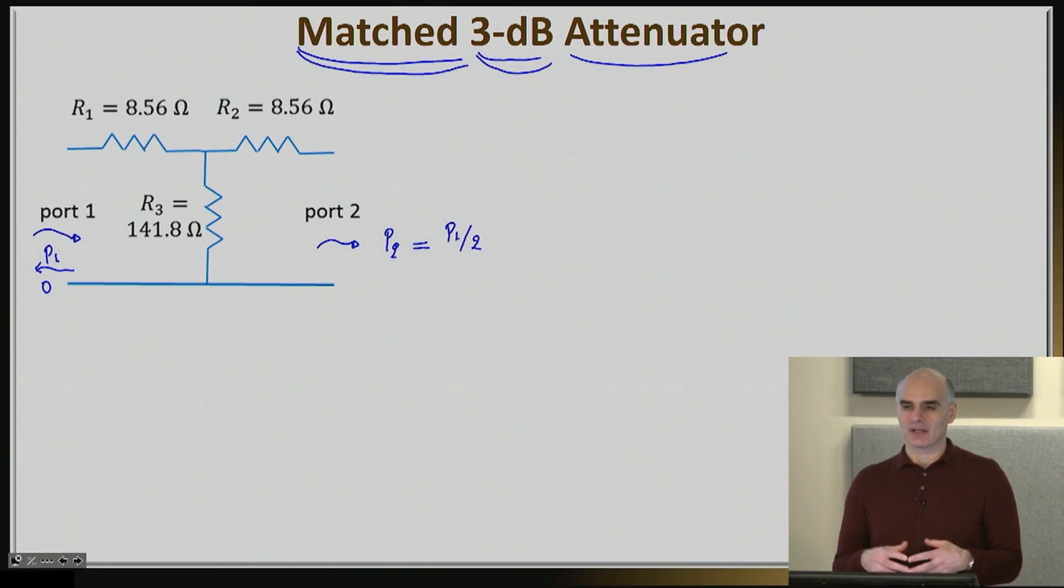In the part of the course where I showed you, for example, the three-way splitter, the electrically small three-way splitter, this was not a matched device in the sense that there was a reflection in ports 1, 2, and 3. The S11 was negative one-third, which means that roughly about 11% of the incident power into port 1 was coming back, and that was not a matched device.